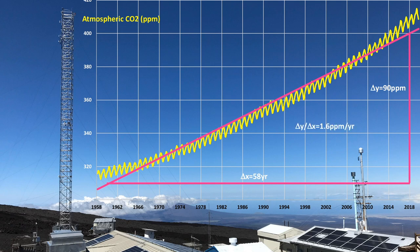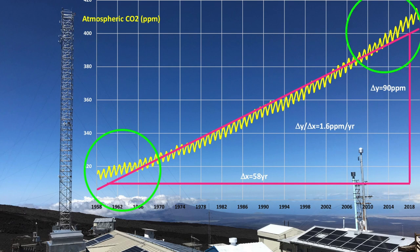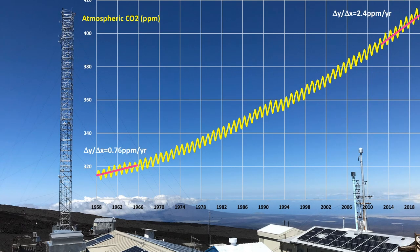There's something else we see when we compare the data to a straight line. In the early part of the record, the rate of change is less than the overall average, and in the most recent years, the rate of change is much greater than average. The rate for the first decade from 1958 to 1967 was 0.7 parts per million per year, and now it's 2.4 parts per million per year. We're adding CO2 now at a rate that's more than three times as fast as we were 60 years ago.